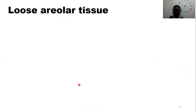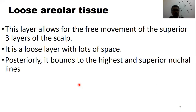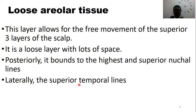This is the loose areolar tissue layer, a very important layer in the study of the scalp. It allows for free movement of the scalp — every time you scratch your head the scalp is moving because of this loose areolar tissue layer. Because it is a loose layer, it has a lot of space within it. Posteriorly it is bounded by the superior nuchal lines, and laterally by the superior temporal lines, appearing to follow the aponeurotic layer.